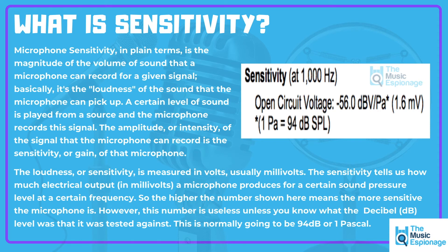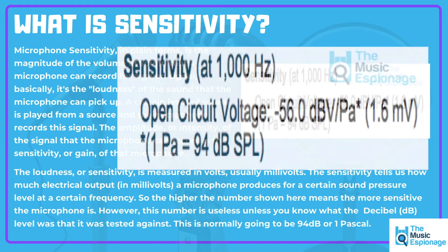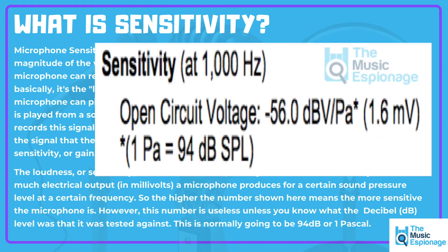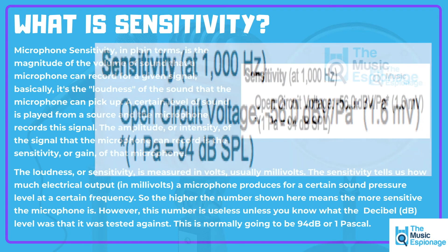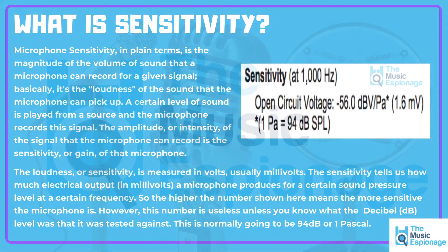The higher the number shown here means the more sensitive the microphone is. However, this number is useless unless you know what the decibel (dB) level was that it was tested against. So this was tested against minus 56 dB volts and it produced 1.6 millivolts. This is normally going to be 94 dB or 1 pascal.